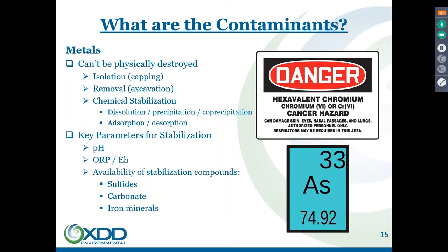Co-precipitation is the second mechanism. The third mechanism is absorption on these formed compounds — iron oxyhydroxides have a lot of active absorption sites that can act as a sponge to remove heavy metals like arsenic from the waters.